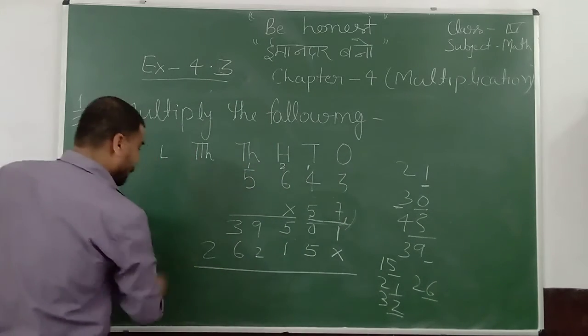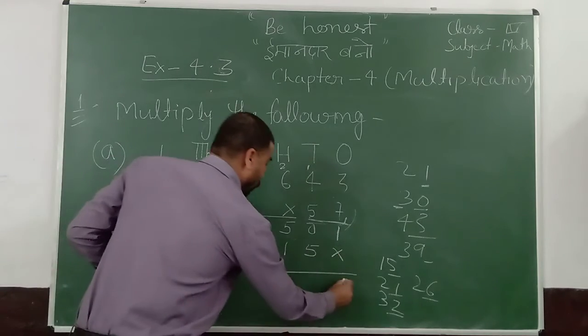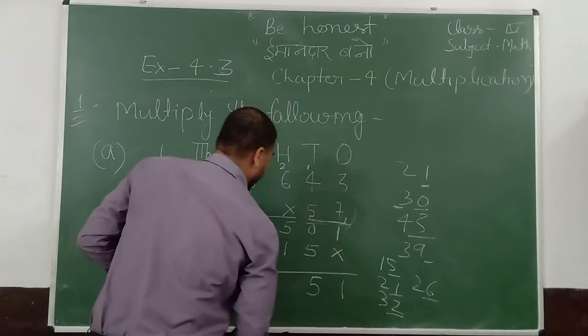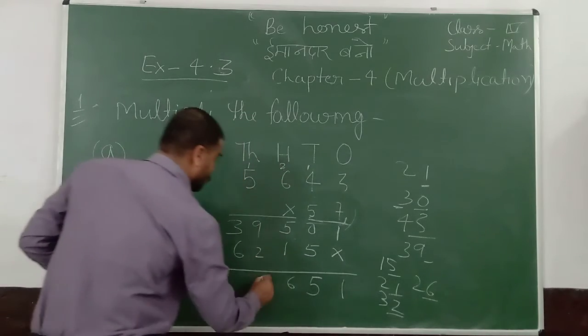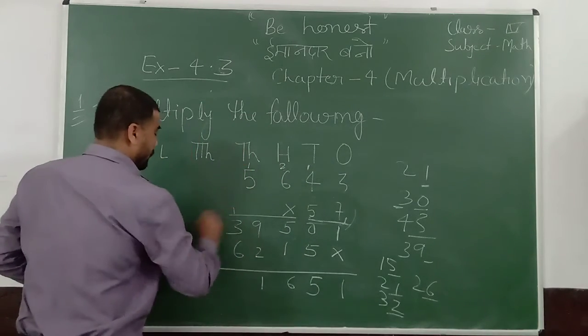And then add that one. 1, 5. 5 plus 1 is 6. 9 plus 2 is 11. 1 is carrying.